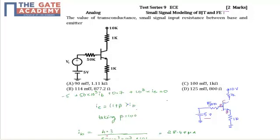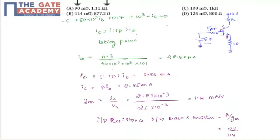So the value can be found out: from this equation we can find out the value of IB, that is 4.3 divided by 50 into 10 to the power 3 plus 10 to the power 3 into 101.